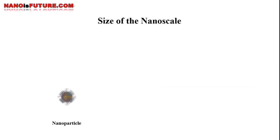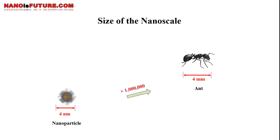Imagine you have a nanoparticle with 4 nanometers diameter. An ant with 4 millimeters length is 1 million times the size of this nanoparticle.